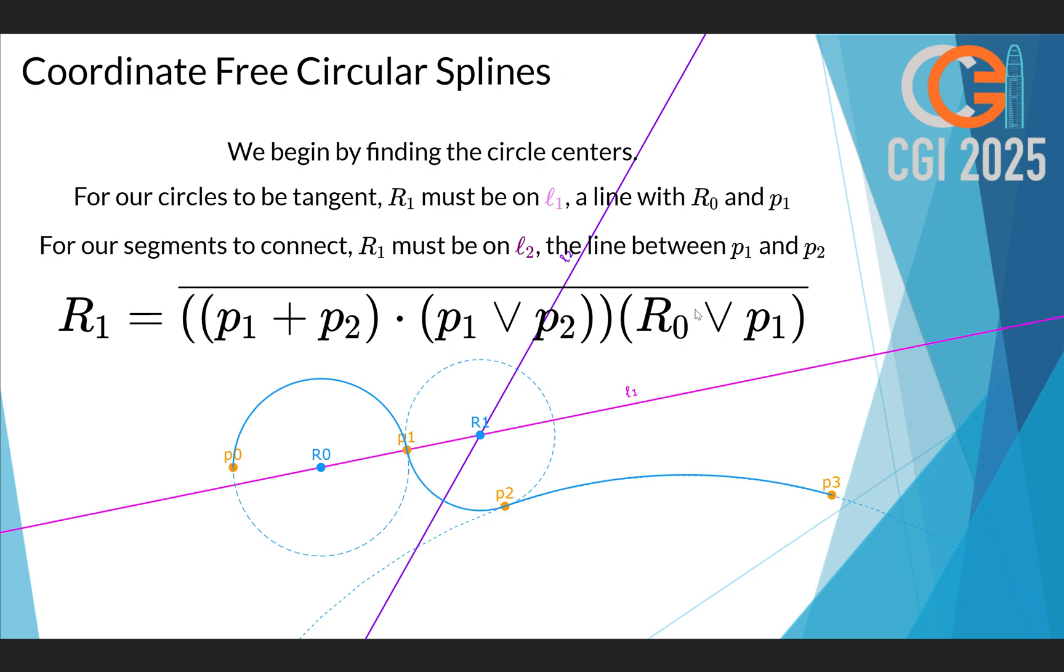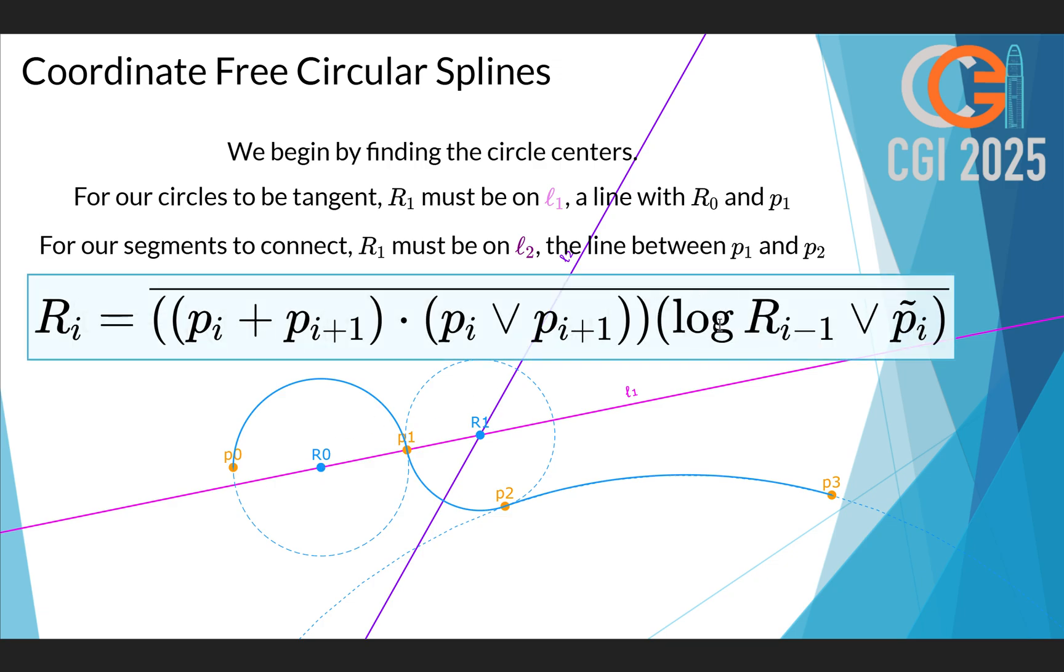However, I've been a little bit sloppy because, of course, R0 here is a rotor and we can't join a rotor. We have to join a point. But, of course, luckily in PGA, when you're taking a logarithm of a rotor, you get, in the 2D case, the point at its center. So that's what we'll do. We will, instead of using R0, we will use the logarithm of R0. And I've also made it independent of the number of points here, but we can still read the same formula. In order to find Ri, we have to add Pi and Pi+1 together. It gives us a point halfway. We have to dot that with the line between them. That gives us the L2 line. Then we have to multiply it with the logarithm of the previous rotor, which is a point here, joined with the point Pi. So that's very nice. That's a beautiful mathematical formula.